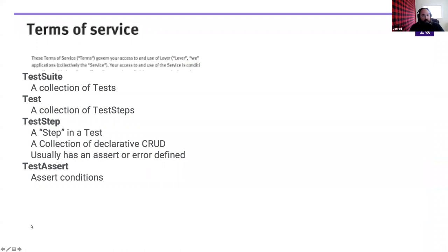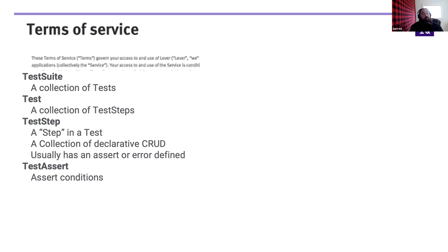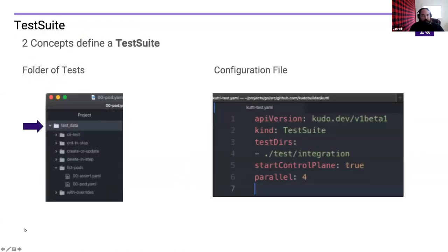There are a few key terms. A test suite is both the folder where all your tests live and a configuration object where you specify how tests run — what cluster to use, whether to start Kind, what your timeouts are, and so on. A test is a collection of test steps, which are your atomic units of declarations applied to the cluster. A test assert allows you to do partial matches or partial assertions on conditions that you want to pass or fail on.